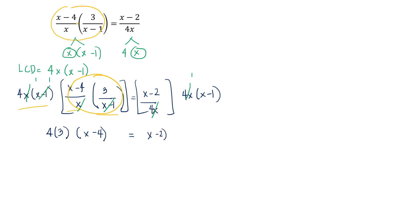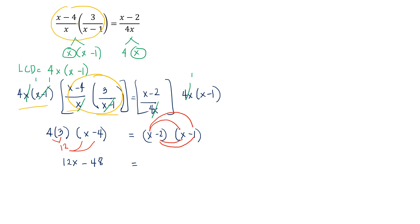On the right side, 4x divided by 4x is 1, so what's left is (x minus 2) times (x minus 1). On the left, 4 times 3 is 12, so we distribute 12 to x and to negative 4: 12 times x is 12x, and 12 times negative 4 is negative 48. On the right, we multiply the binomials (x minus 2) and (x minus 1) by distributing each term: x times x is x squared, x times negative 1 is negative x, negative 2 times x is negative 2x, and negative 2 times negative 1 is positive 2.